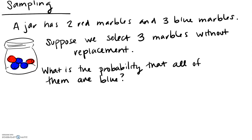The last of our probability topics is sampling. We saw this exact example as the Kahoot quiz on Thursday — a jar with two red marbles and three blue marbles. In our previous example we only selected two, but here let's suppose we select three marbles from this jar. This is what makes this a sampling question: we're going to take a sample of three things, and in this case that sample is going to be made without replacement.